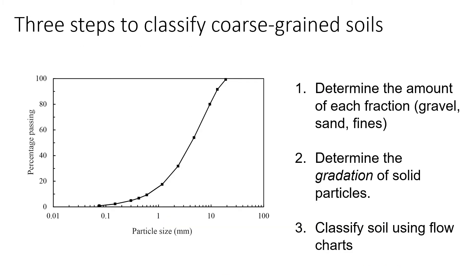There are three major steps that we need to follow to classify coarse grain soil. First, we need to determine the amount of each fraction — how much gravel, sand, and fines are in the soil. Second, we need to determine the gradation of solid particles. Once we know both of these factors, we can classify the soil using flow charts or any other classification systems.